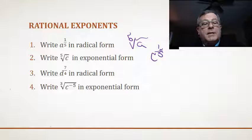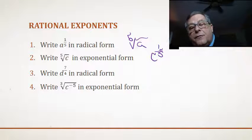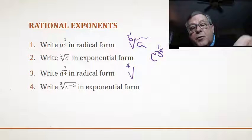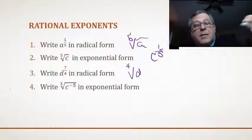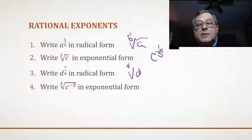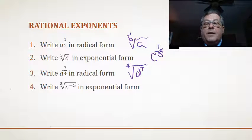All right, now, we got write d raised to the power of 7 over 4 in radical form. Well, that denominator 4 is telling us we're going to be trying to take the fourth root of this variable d, but that 7 in the numerator tells us that d is raised to the power of 7. So, taking that in radical form, we're taking the fourth root of d raised to the seventh power.